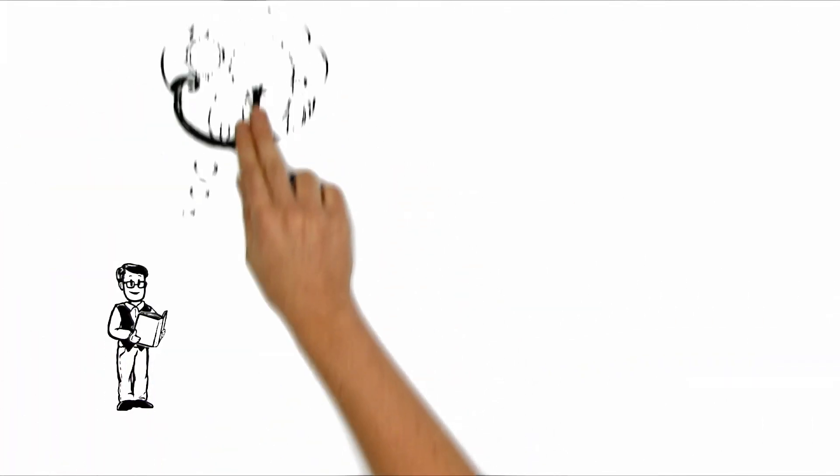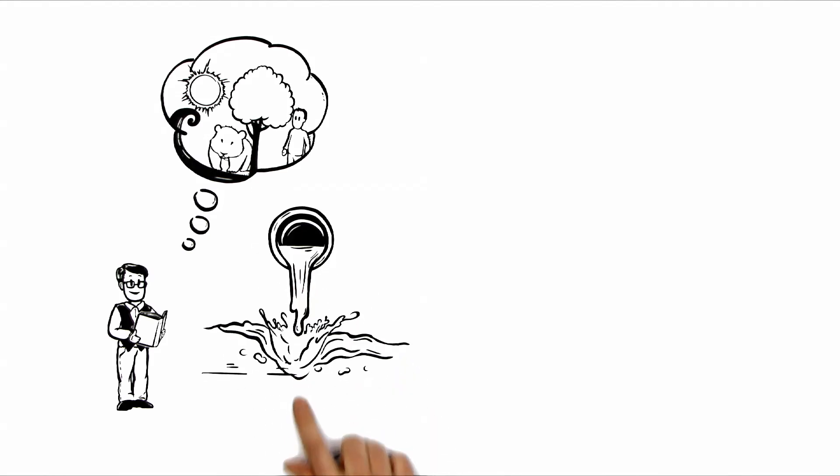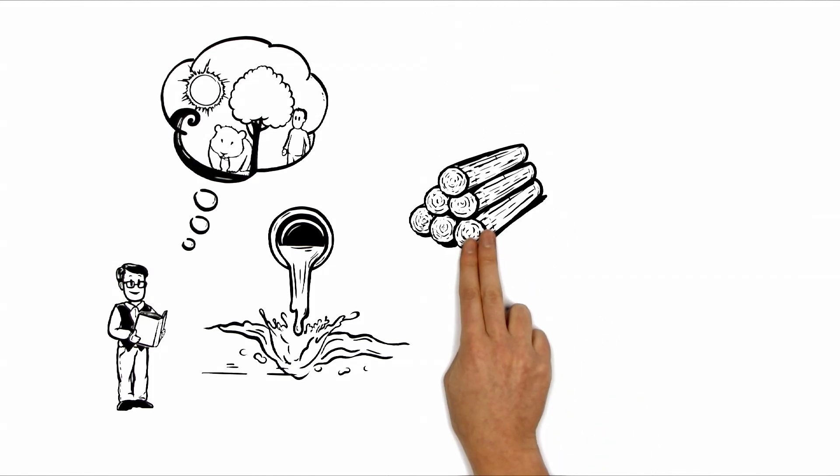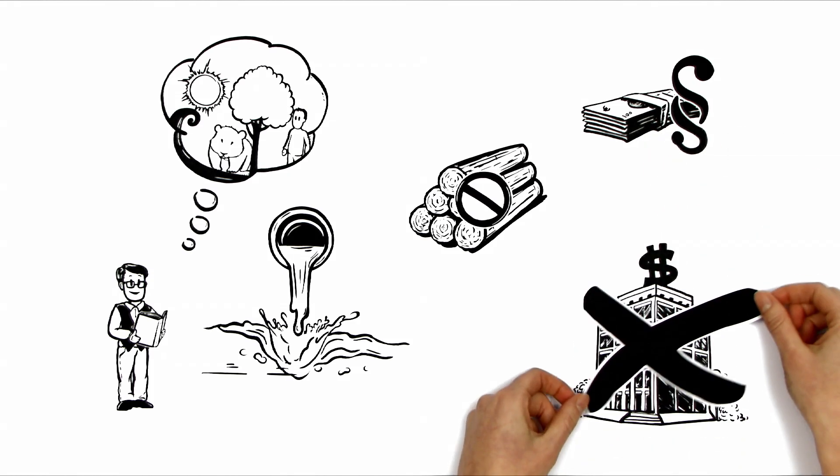Michael still has a lot to learn about biodiversity. After all, when producing his furniture, he uses varnishes which pollute the water. Further, his timber is not certified. This means that Michael is not complying with the credit policies of his bank, and therefore cannot get a loan.